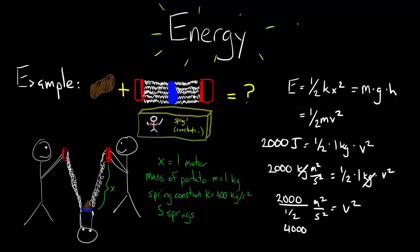So v equals the square root of 4,000, or about 63 meters per second, or 140 miles per hour.